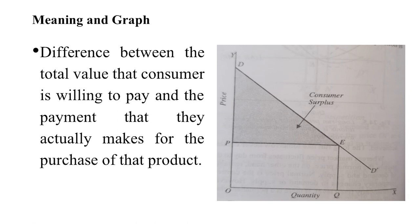On the OX-axis there is quantity and on the OY-axis there is price. OQ is the amount of quantity the consumer wants to purchase and OP is the price paid for the product. The demand curve slopes downward from left to right. The shaded area P-D-E represents the price he is willing to pay, that is P-D, but what he actually paid is OP.